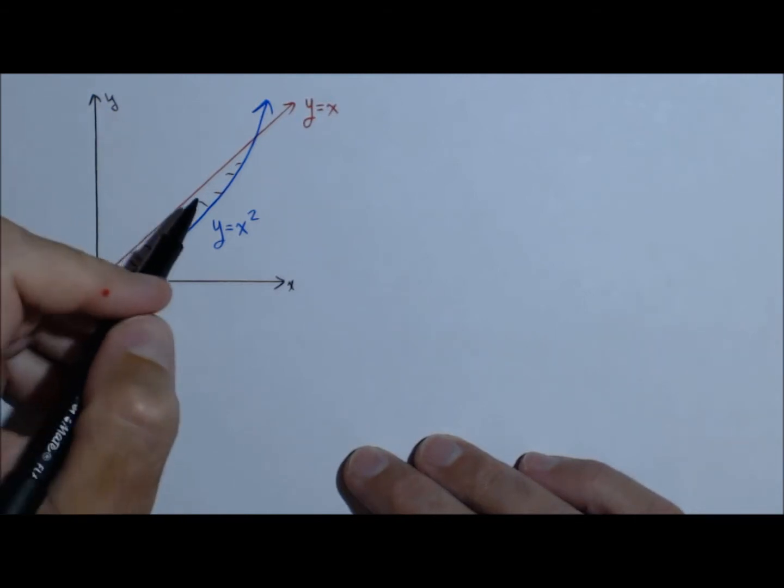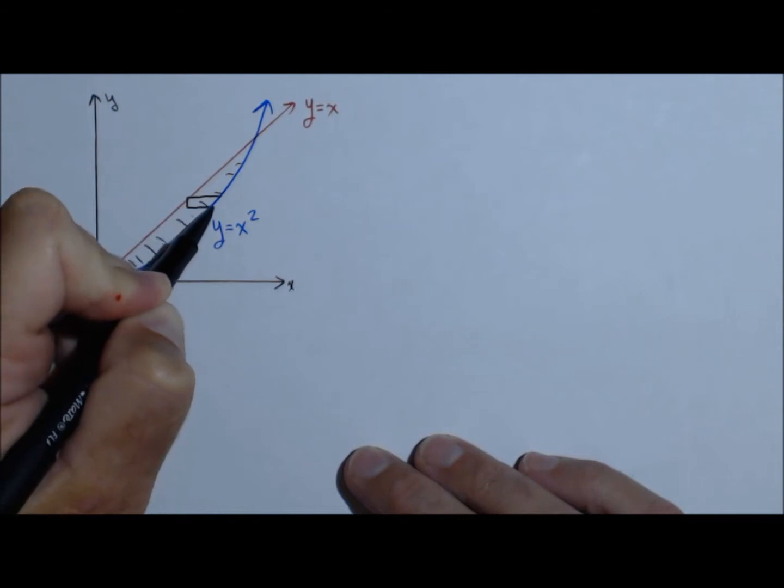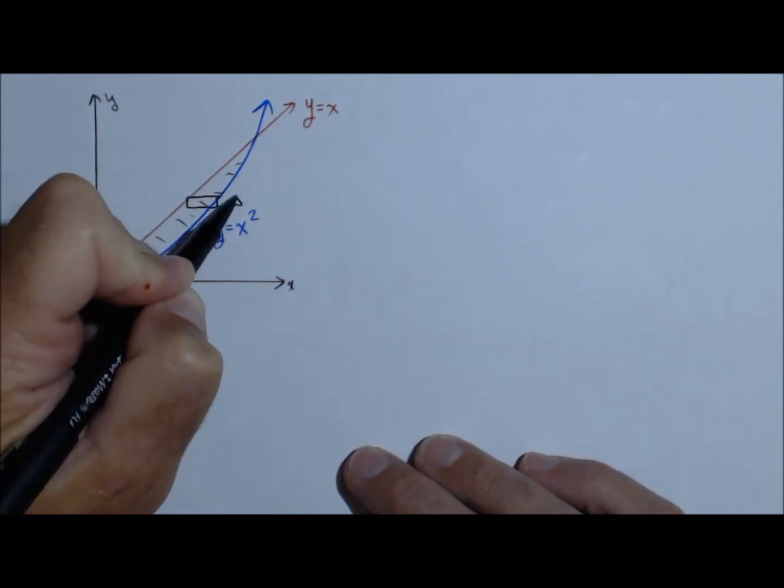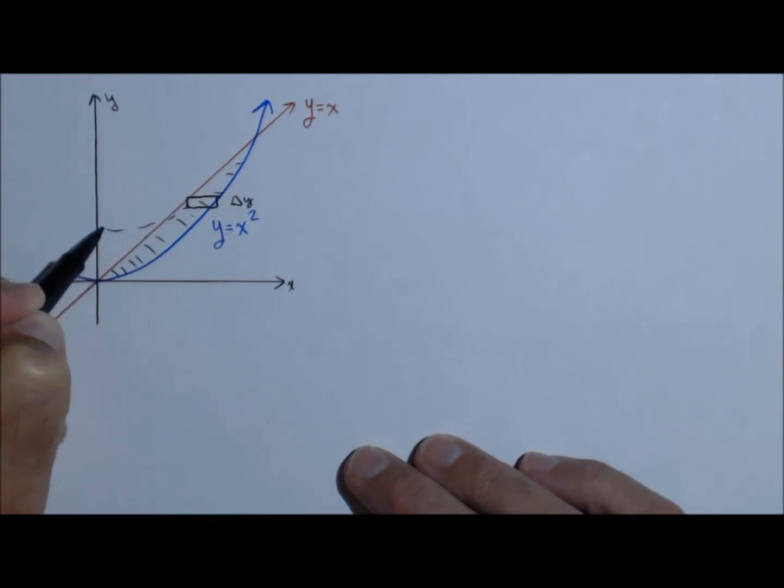Now, we need to take a horizontal slice, because we want to take that slice so there's no curvature. That slice is going to have a height of delta y, and we're going to see what it takes to revolve just that slice around the y-axis.